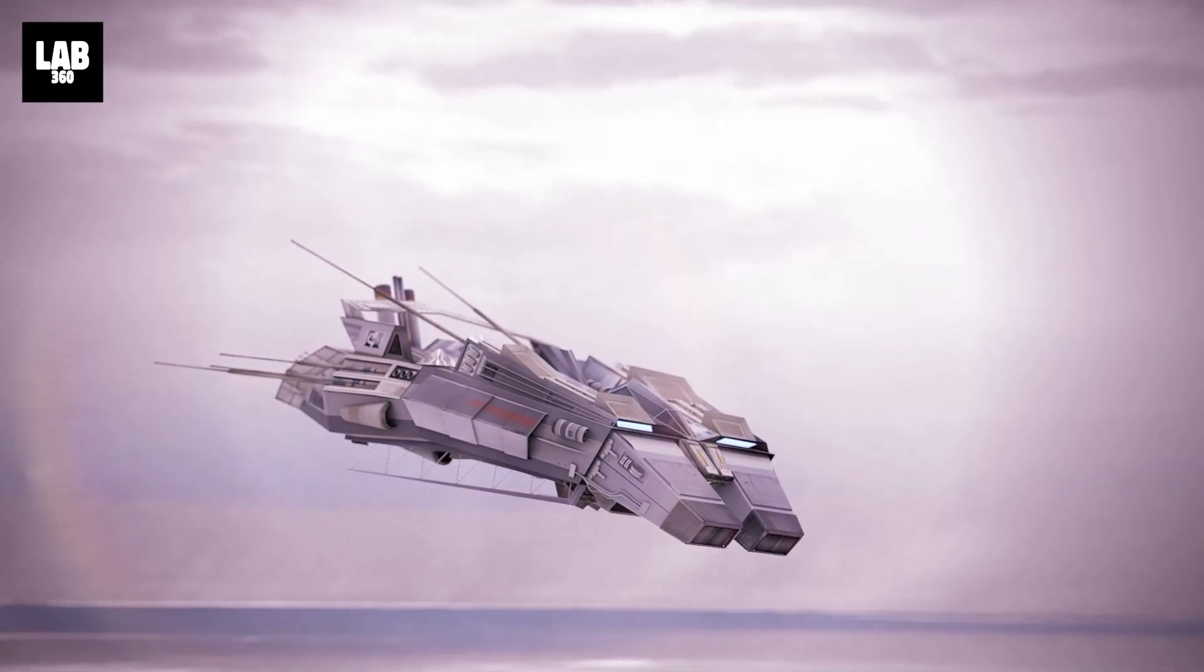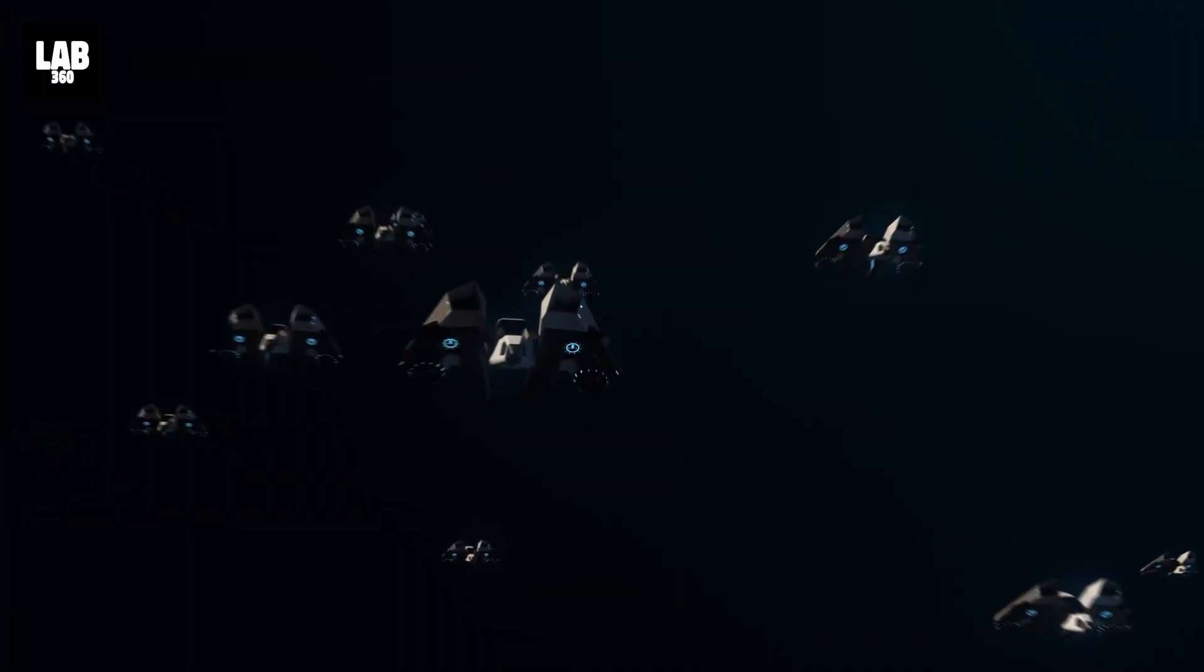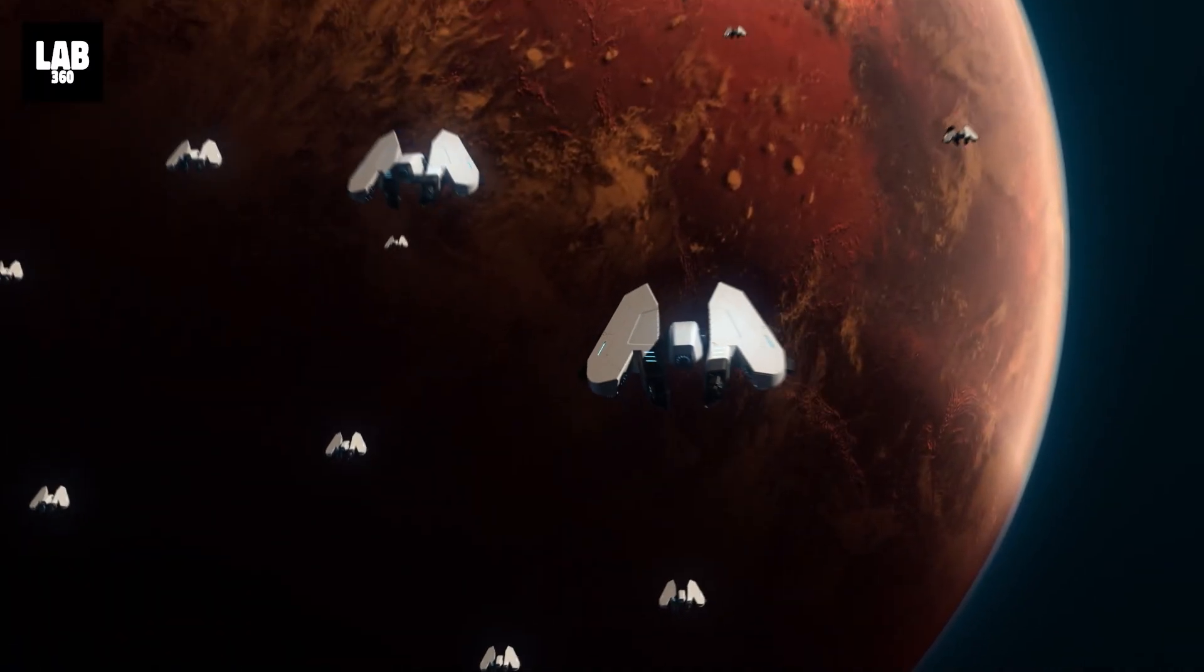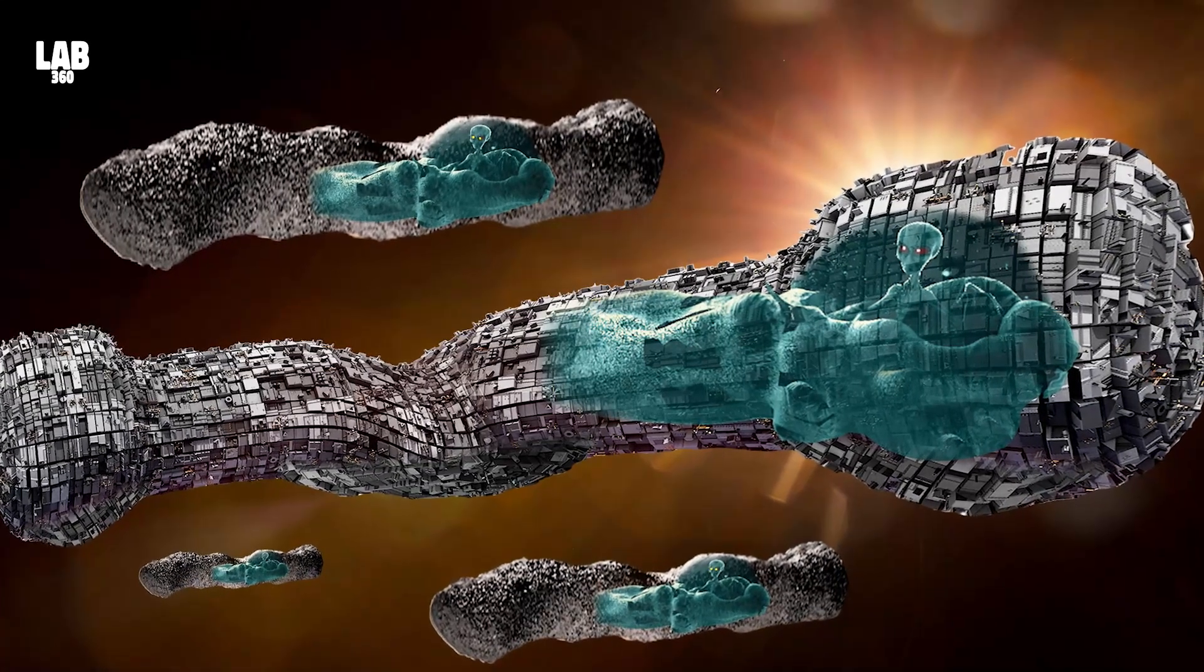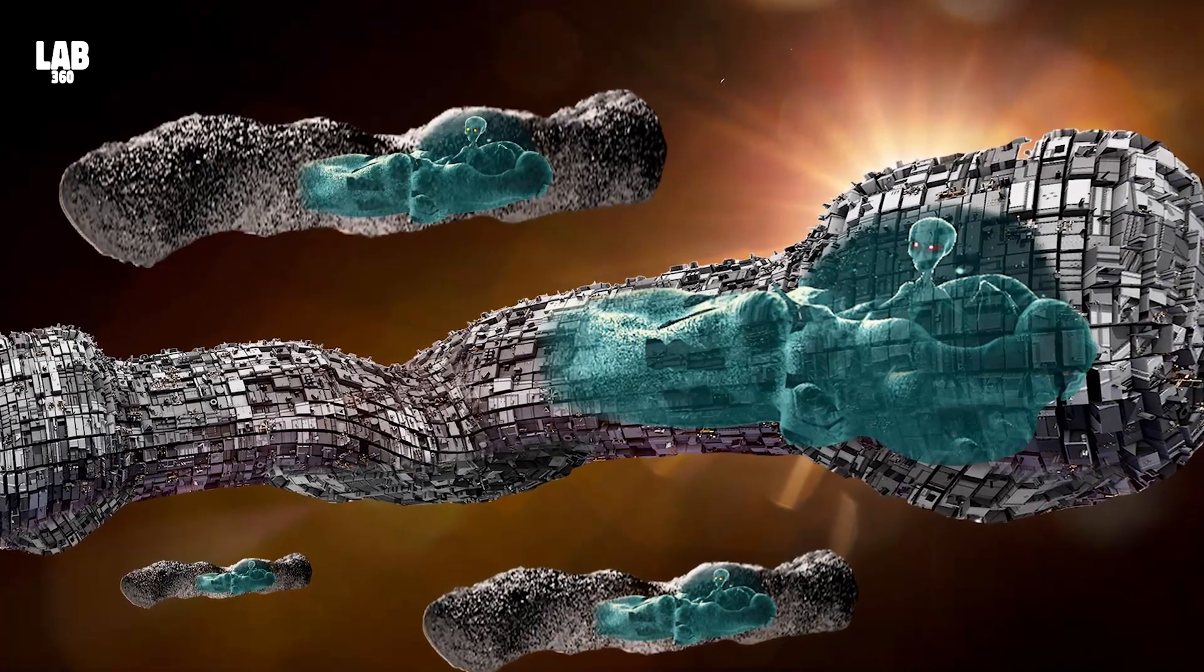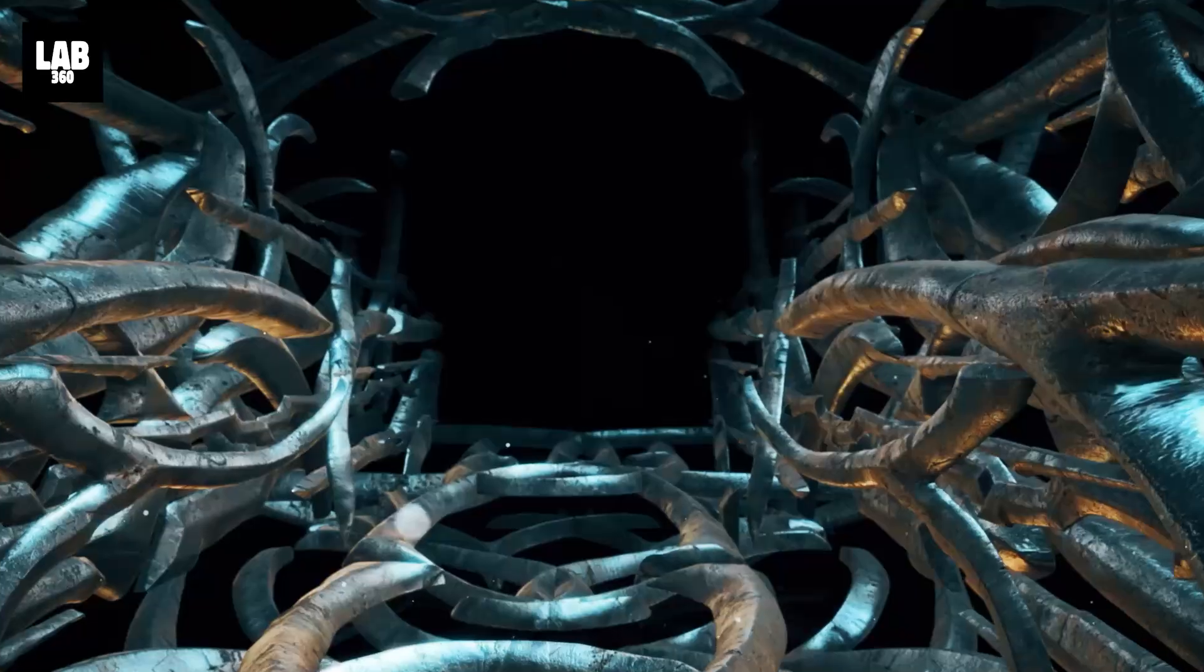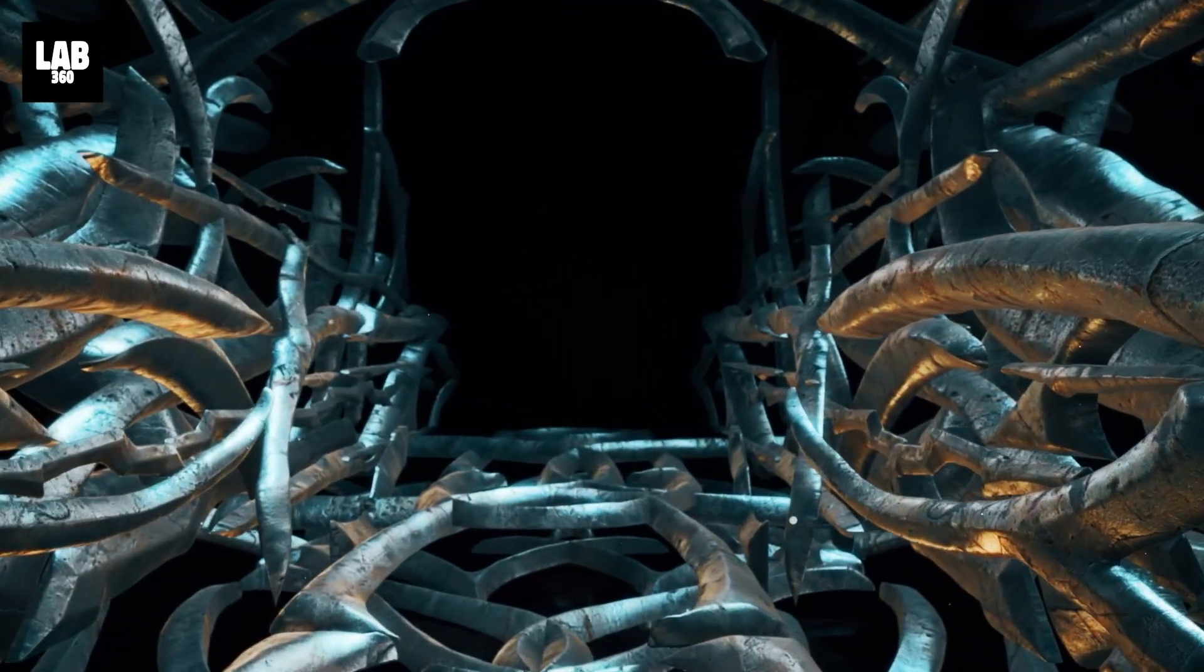Meanwhile, Avi Loeb suggests that not only are there aliens in our galaxy, but there are actually four quintillion Oumuamuas speeding across our solar system. To be fair, Loeb isn't outright saying Oumuamua was an alien spacecraft per se, but he is saying we should be open to that possibility.